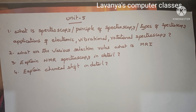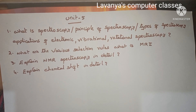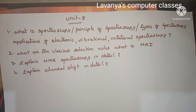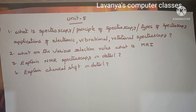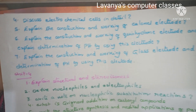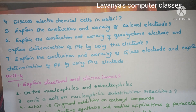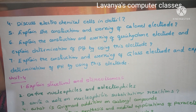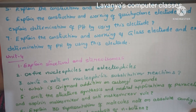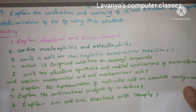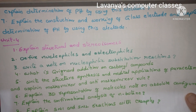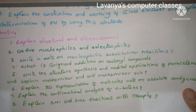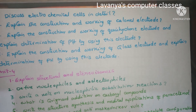This is the question paper pattern. Out of 5 units, select any 3 units properly and read all the questions in those 3 units. Don't skip any choices in those questions. Take a screenshot and read all the questions thoroughly. Then you can easily get good marks in chemistry.